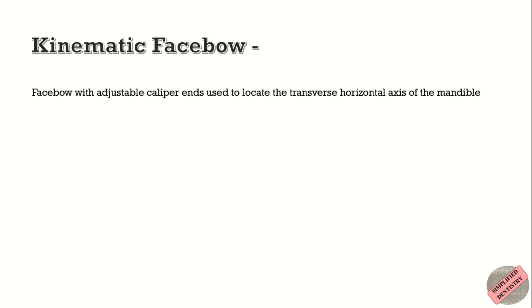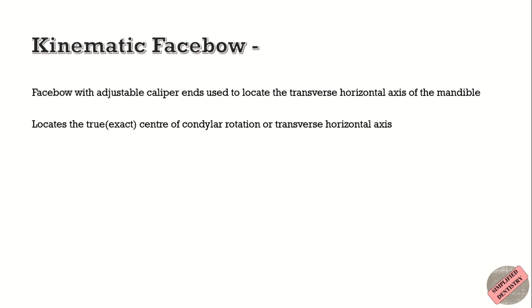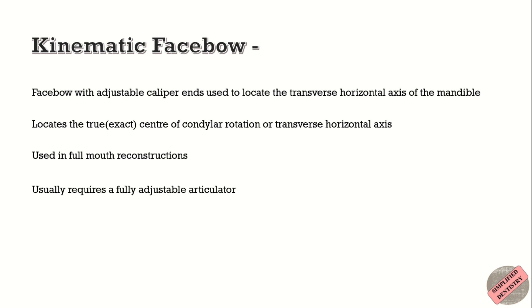The kinematic face bow is a face bow with adjustable caliper ends used to locate the transverse horizontal axis of the mandible. It locates the true or exact center of condylar rotation, or transverse horizontal axis. It is used in full mouth reconstructions and usually requires a fully adjustable articulator.